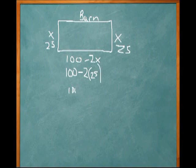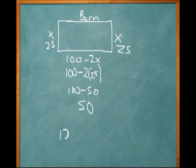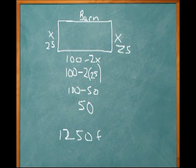Looking down here, we got 100 minus 2 times 25, or 100 minus 50, or just 50. So our maximum area is if we make the two sides 25 feet long and the long side 50. This is a max area of 1250 square feet. That's how you maximize a function.